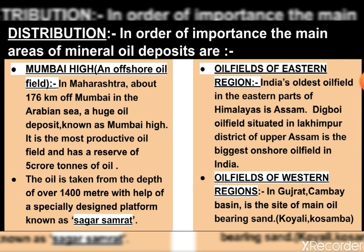Petroleum is mainly produced in the Gulf countries like Saudi Arabia, Iraq, Iran, USA, Russia, and others. In India, it is mainly found in Assam, Digboy and Sip Sagar. Some oil fields are also located in Gujarat, that is Ankaleshwar, Maharashtra that is Bombay High, and it is also found in Andhra Pradesh.